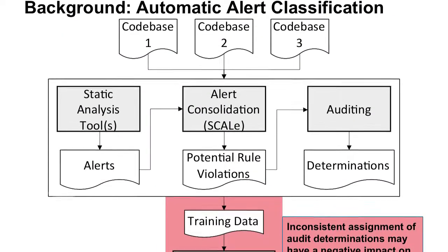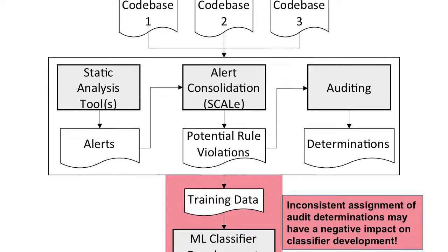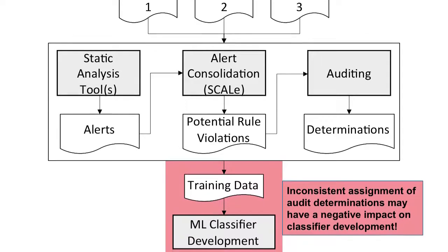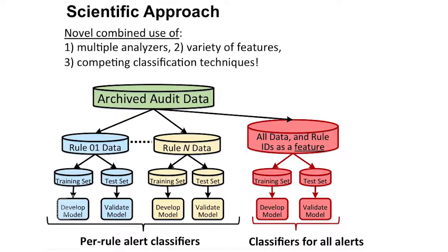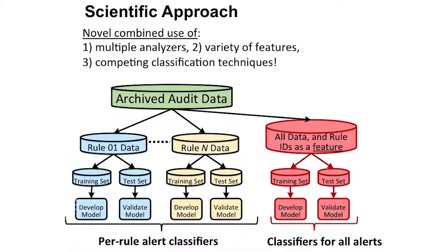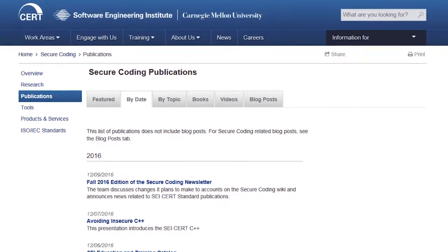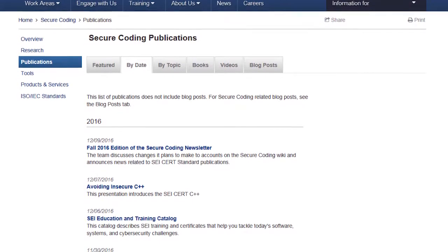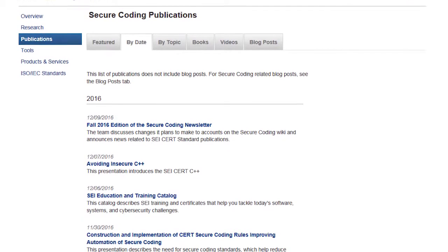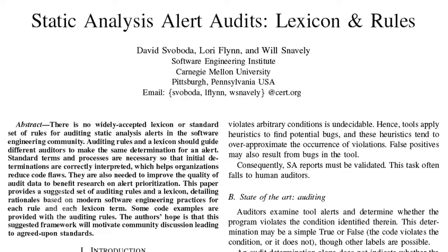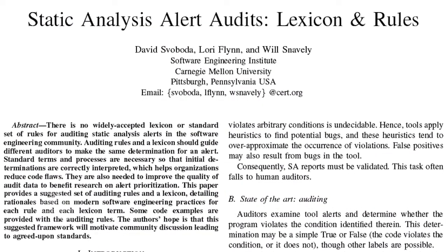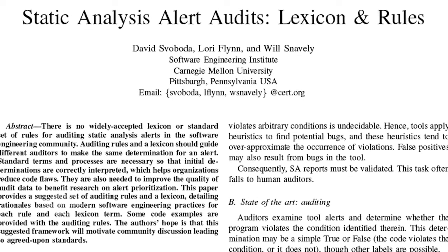Our research on alert classification and prioritization aims to use statistical methods to efficiently triage and prioritize static analysis alerts. You can view our initial research publications on the CERT Secure Coding website, including good results with classifiers for alerts from multiple tools that had high-precision test results. Also, you can get our paper there to learn about auditing rules and an auditing lexicon that we recommend others use to improve audit consistency and develop better classifiers. Thanks for watching this SEI Cyber Minute.